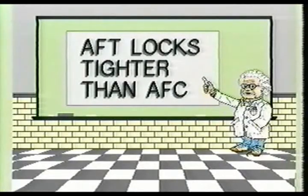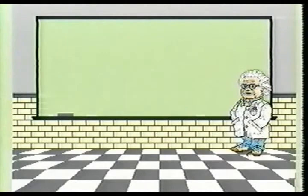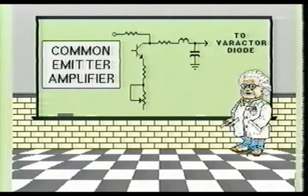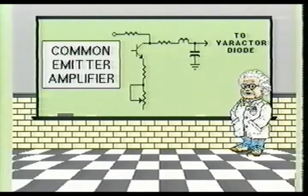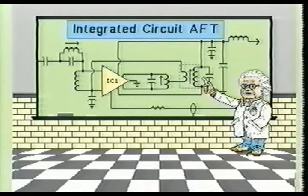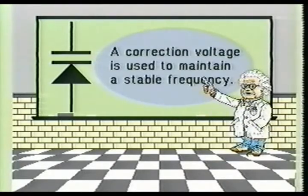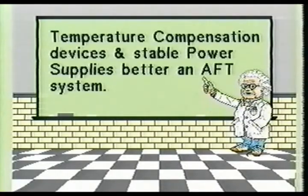Automatic fine-tuning is better able to lock in on the appropriate frequency than the automatic frequency control, also called automatic frequency correction. A Foster-Sealy discriminator is sometimes used in the television receiver to detect frequency drift and generate an error voltage in proportion to this drift. Since the Foster-Sealy discriminator outputs a small inverted error voltage, a common emitter circuit is used to reverse and provide the proper amplification of this voltage. Integrated circuits are used in most newer television receivers for detecting, amplifying, and correcting errors in frequency drift. Varactor diodes in the tuner's local oscillator circuit use a correction voltage to maintain a stable operating frequency. Temperature compensation devices and very stable power supplies help ensure tight frequency specifications within the automatic fine-tuning system.